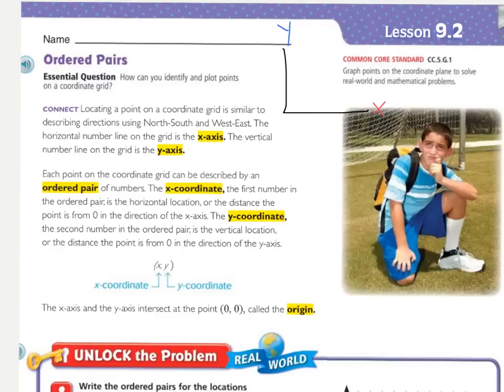Then the y-coordinate, the second number in the ordered pair, is the vertical location or the distance the point is from 0 in the direction of the y-axis.